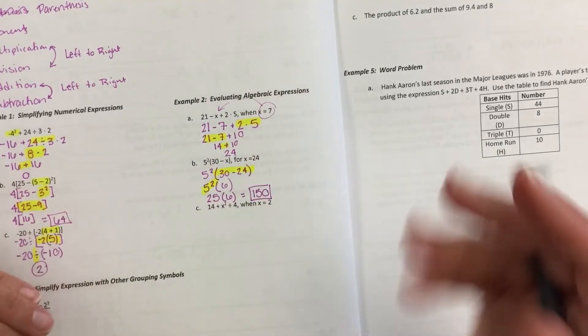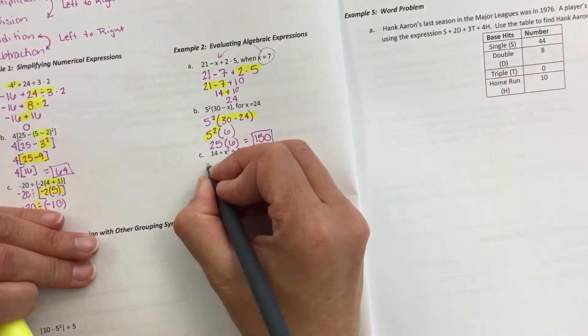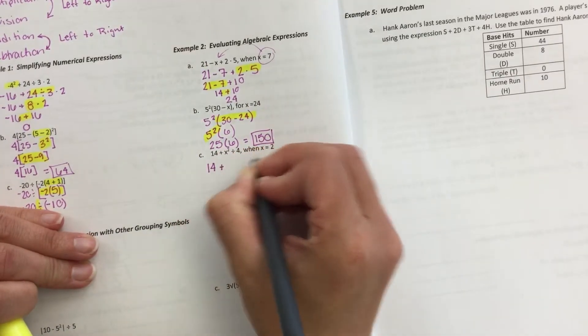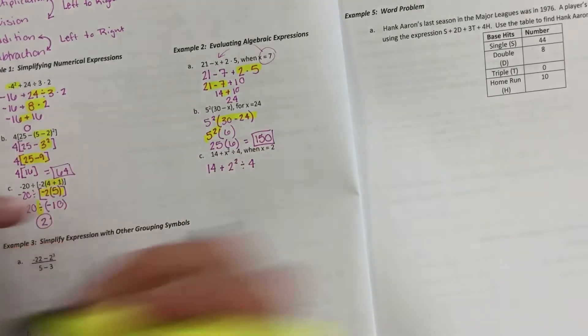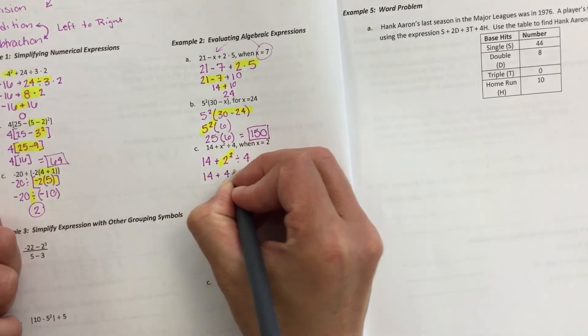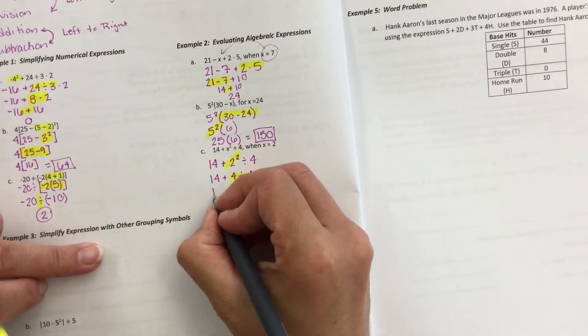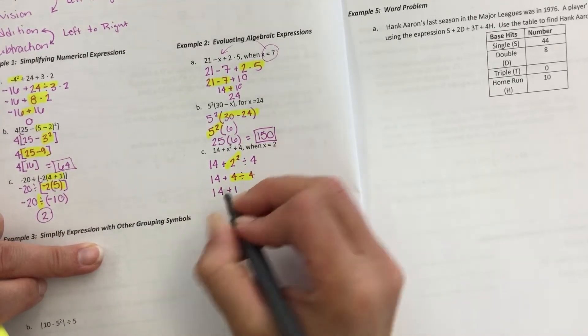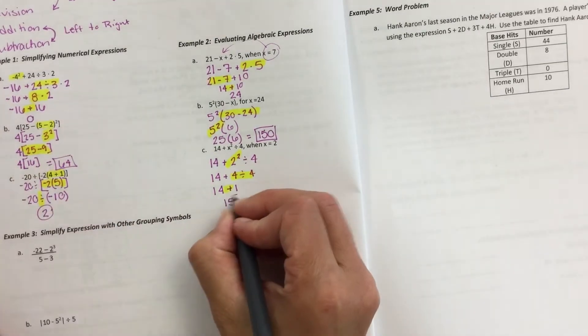Or like a quarter, like money-wise. Okay, my next one. I have 14 plus 2 squared divided by 4. Exponents first. 14 plus 4 divided by 4. Divide. 14 plus 1. So I get 15. Your answer?